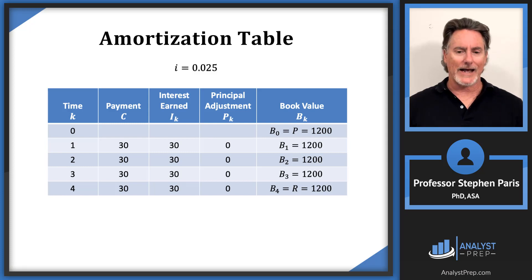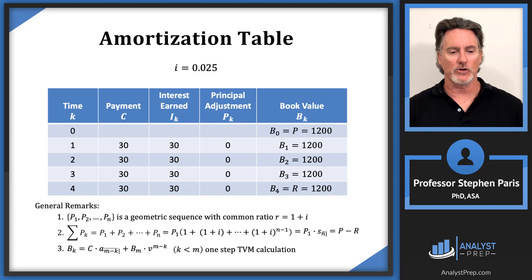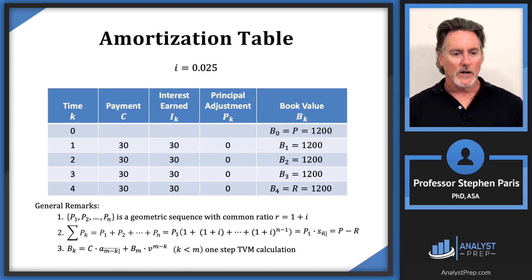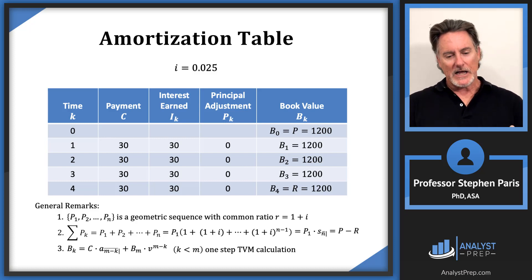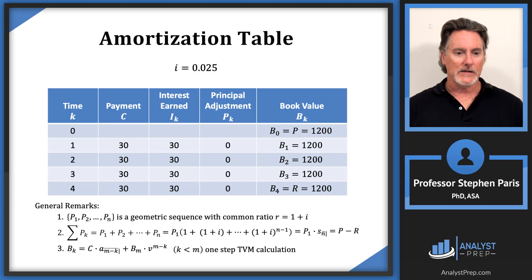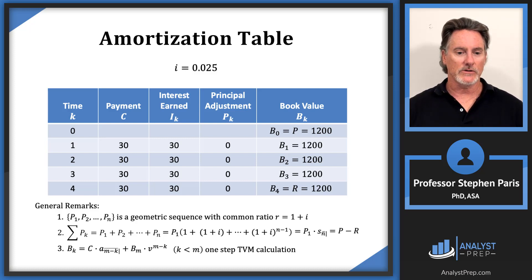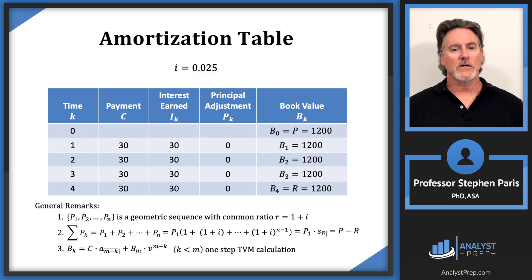These remarks carry over from loan amortization tables and bond amortization tables generally, whether bought at premium or discount. For a bond bought at par, they're trivially satisfied. For instance, the principal adjustment column (P) can be viewed as a geometric sequence since 0 × (1 + i) = 0. Summing the P column gives zero, which equals the price minus the redemption value — both $1,200 — so the difference is indeed zero.